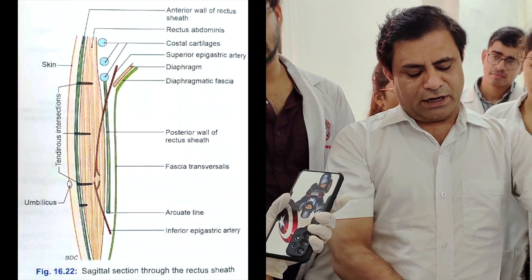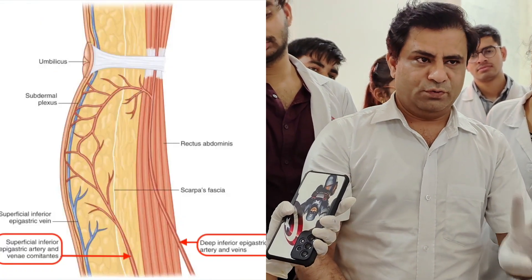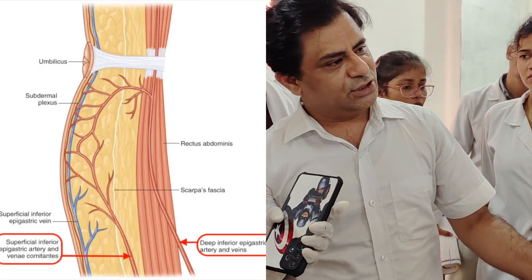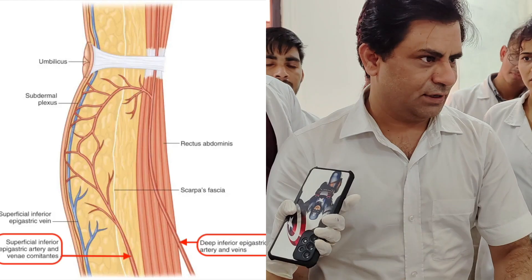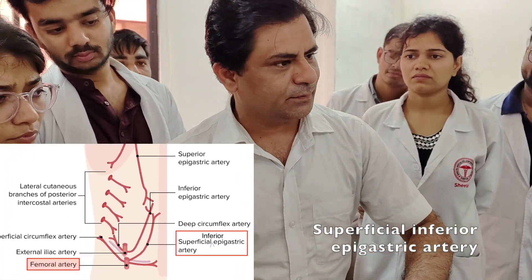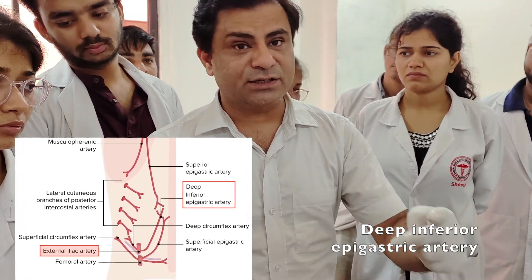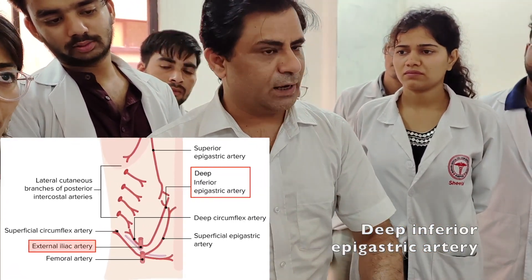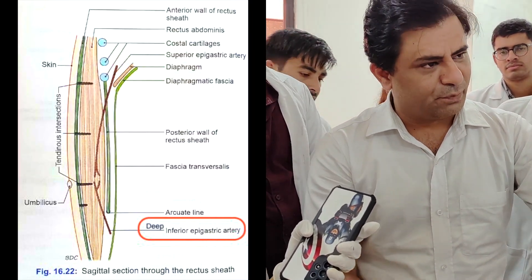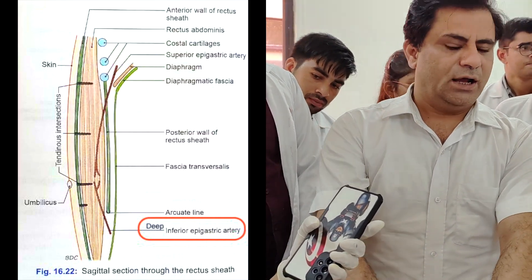The contents include the inferior epigastric artery and vein. Remember there are two vessels: the superficial inferior epigastric artery and vein, and the deep inferior epigastric artery and vein. The superficial inferior epigastric artery is a branch from the femoral artery, and the deep inferior epigastric artery is a branch from the external iliac. These deep vessels enter the rectus sheath from behind, below the arcuate line, and reach toward the umbilicus.